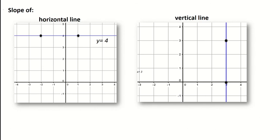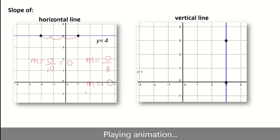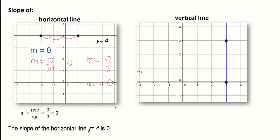What is the slope of a horizontal line? The line is lying flat, so the rise is zero. The run might be three or any value — but zero divided by any number is still zero. Therefore, the slope of a horizontal line is always equal to zero. For example, the slope of the horizontal line y equals four is zero.